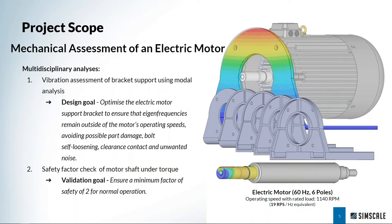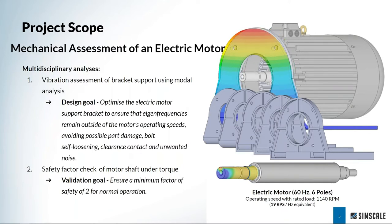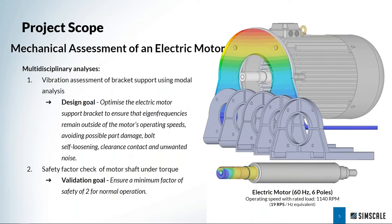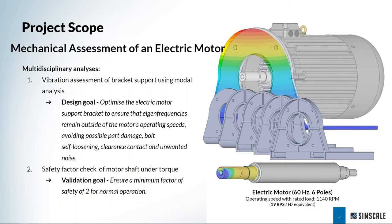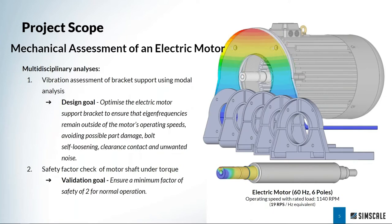The second assessment we will look at is a safety factor check for the shaft itself under torque, under a couple of real-world load cases. Our validation goal is ensuring a minimum factor of safety of two for normal operation. We're using mild steel for the shaft, and a safety factor of two means our stress is about 50% of the yield stress of the material, which brings it close to the endurance limit of the steel itself — meaning unlimited fatigue life. If we're getting up to three and four, we're guaranteeing infinite fatigue life of the part as well.